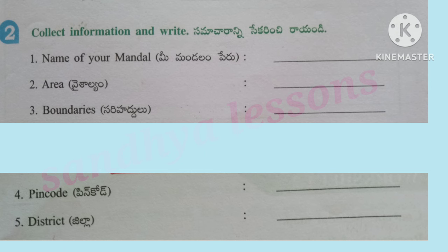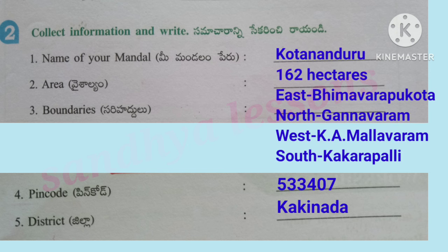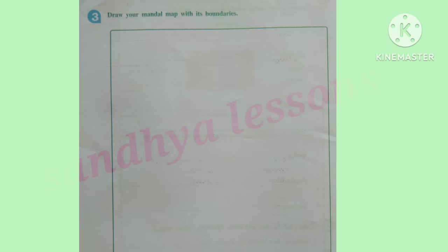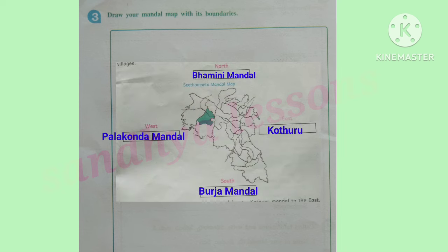Question 2: Collect information and write — Name of your Mandal, Area, Boundaries, Pin code, District. Question 3: Draw your Mandal map with its boundaries. Setampeta Mandal has Kotturu to the East, Bhamini Mandal to the North, Palakonda Mandal to the West, and Burjja Mandal to the South.